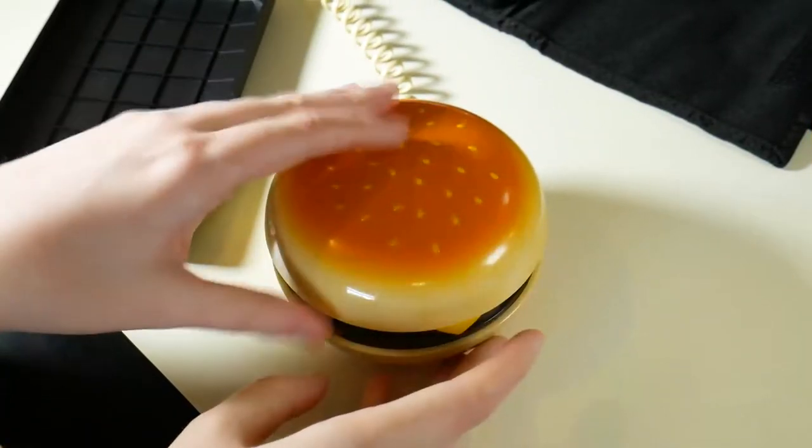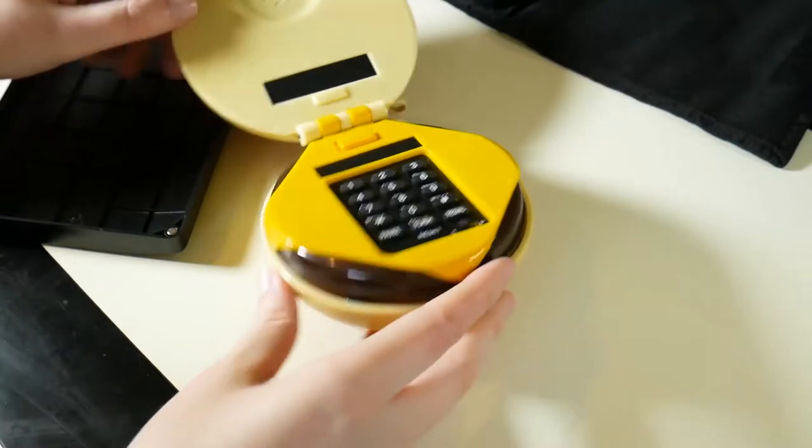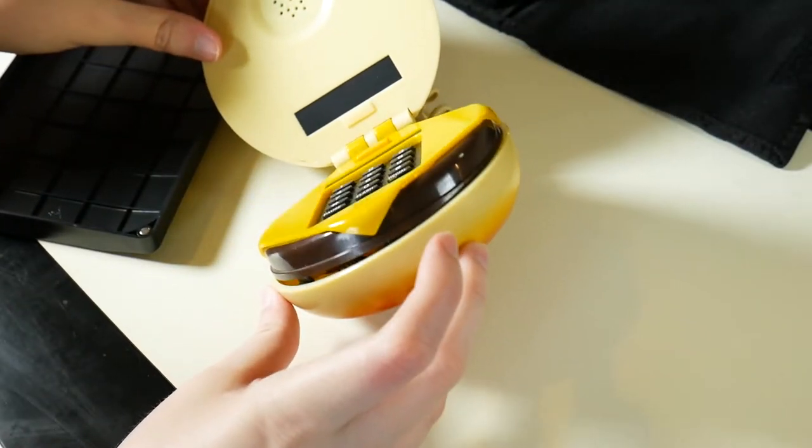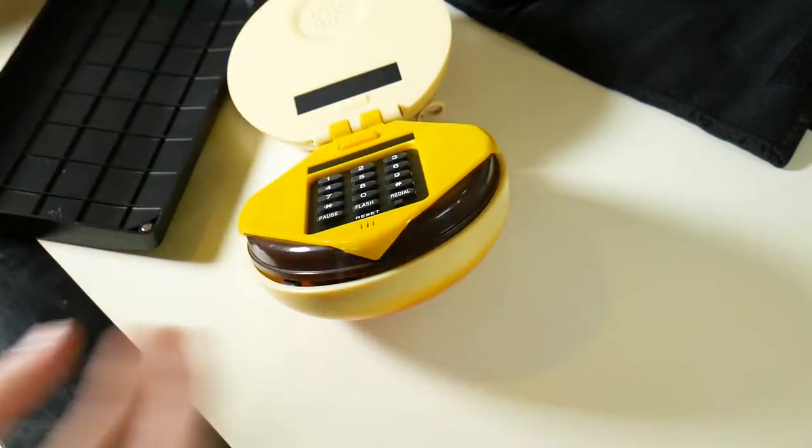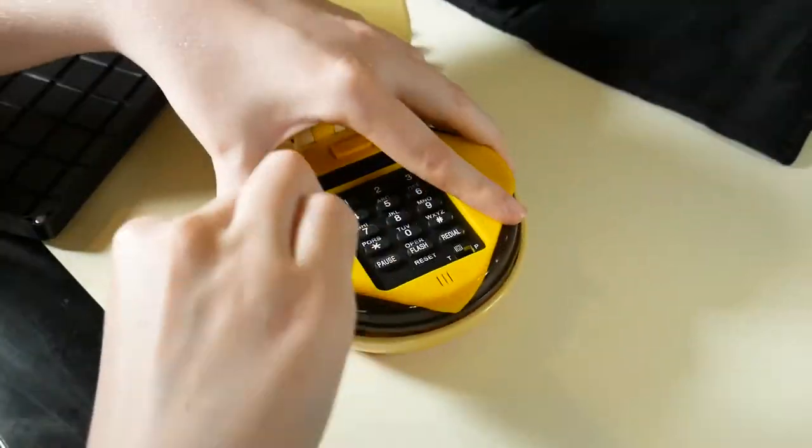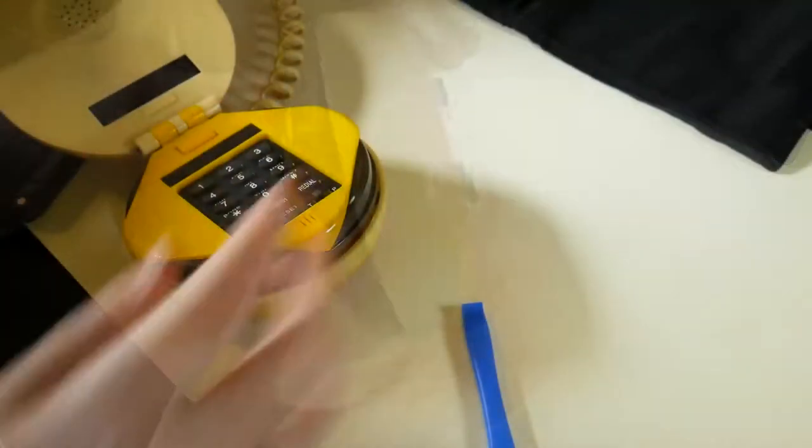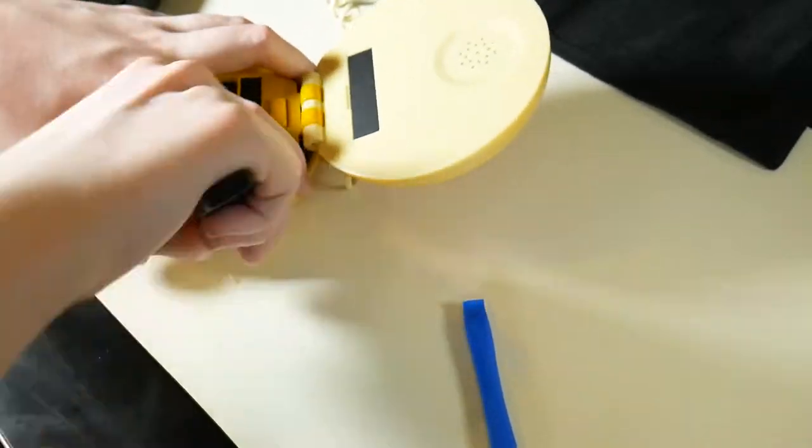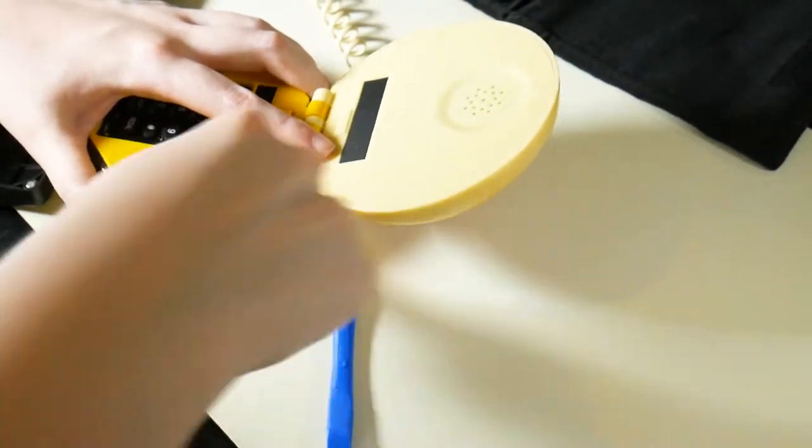So probably the most daunting part of fixing this phone and what made me really put it off was how was I going to get into this without damaging it? Because honestly, more than half the reason why I have this is because it's the burger phone from Juno. So I didn't want to break it, but because it wasn't serving me any purpose, I also kind of told myself if you do break it more, it's not really that big of a loss.